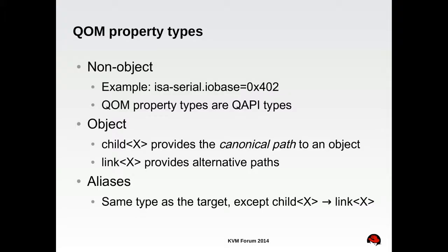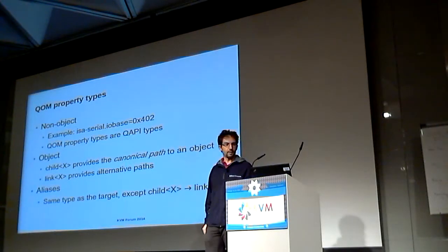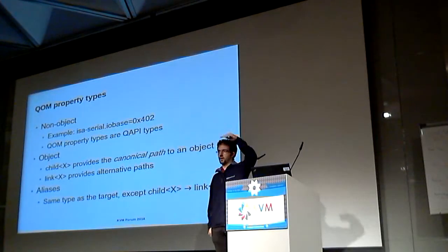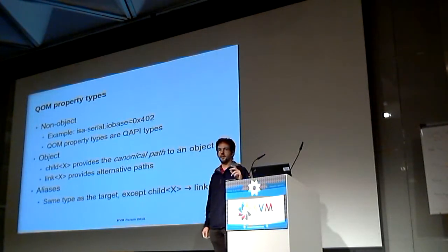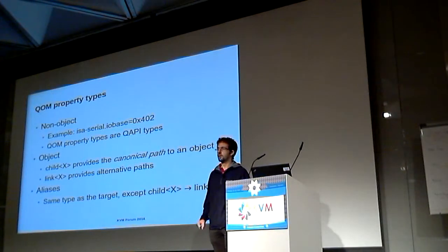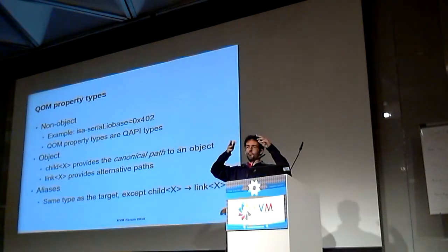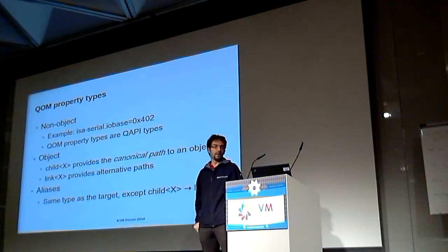QOM property types can be split into two parts: non-objects and objects. Non-objects are just QAPI types, while objects are of two kinds: children and links. Children are interesting because there can be only one path — exactly one path — that goes from the root of the QOM composition tree down to an object following child properties. So if you have a device, you follow machine, then peripherals, then HD for hard disk drive, and the canonical path would be slash machine slash peripheral slash HD. If you want alternative paths, you can add link properties.